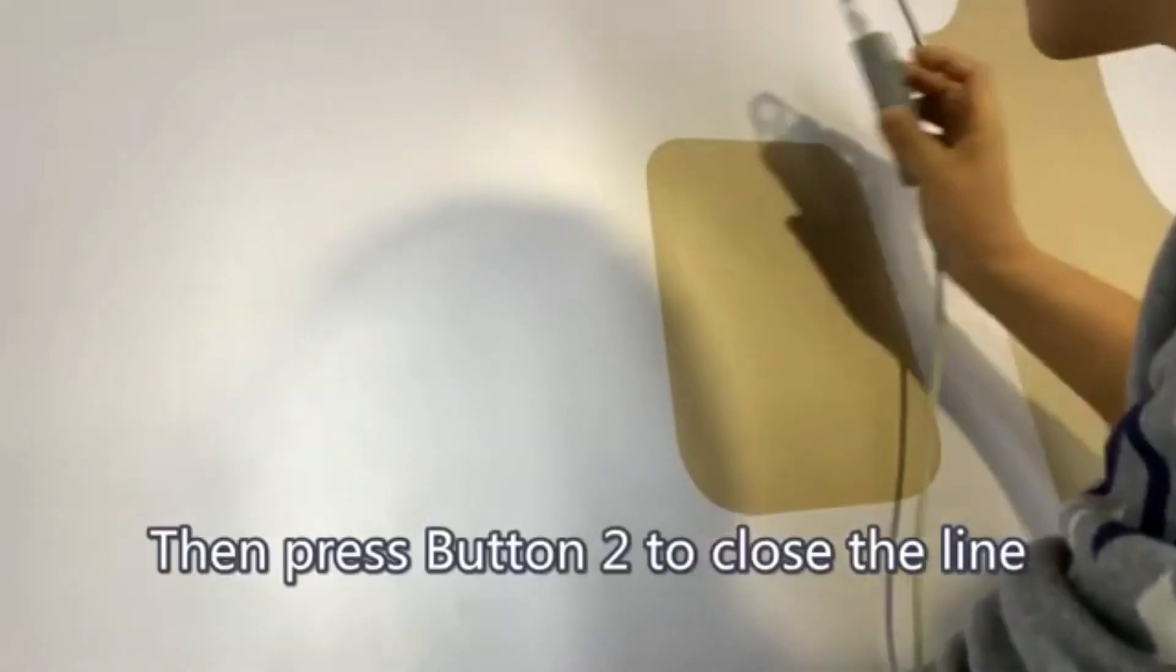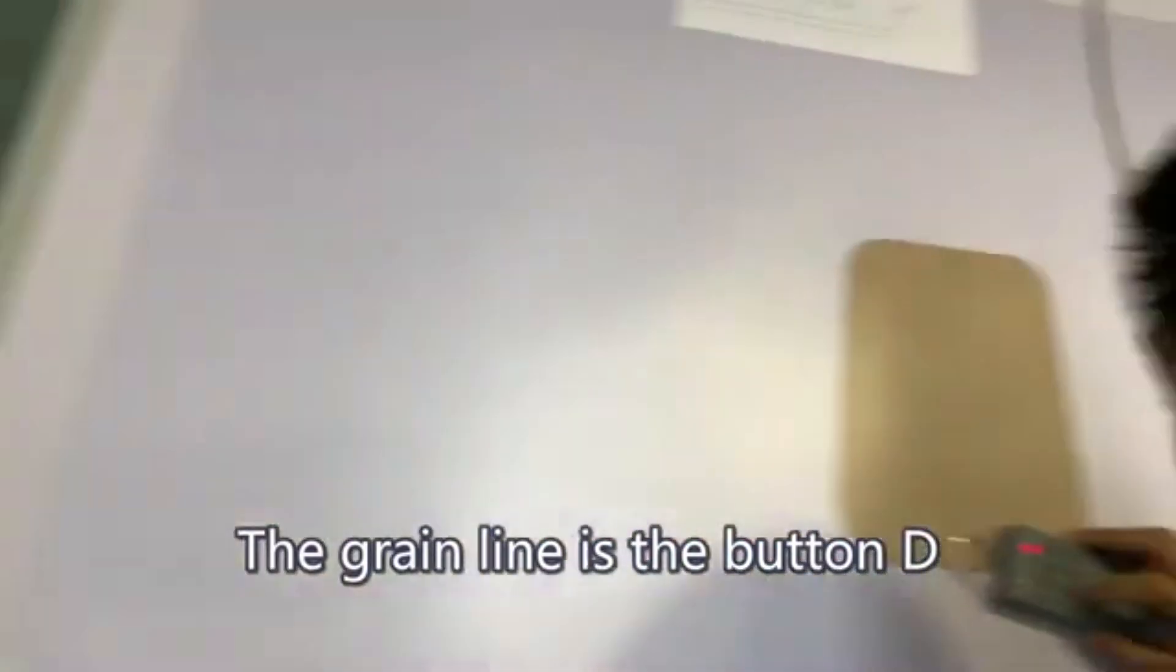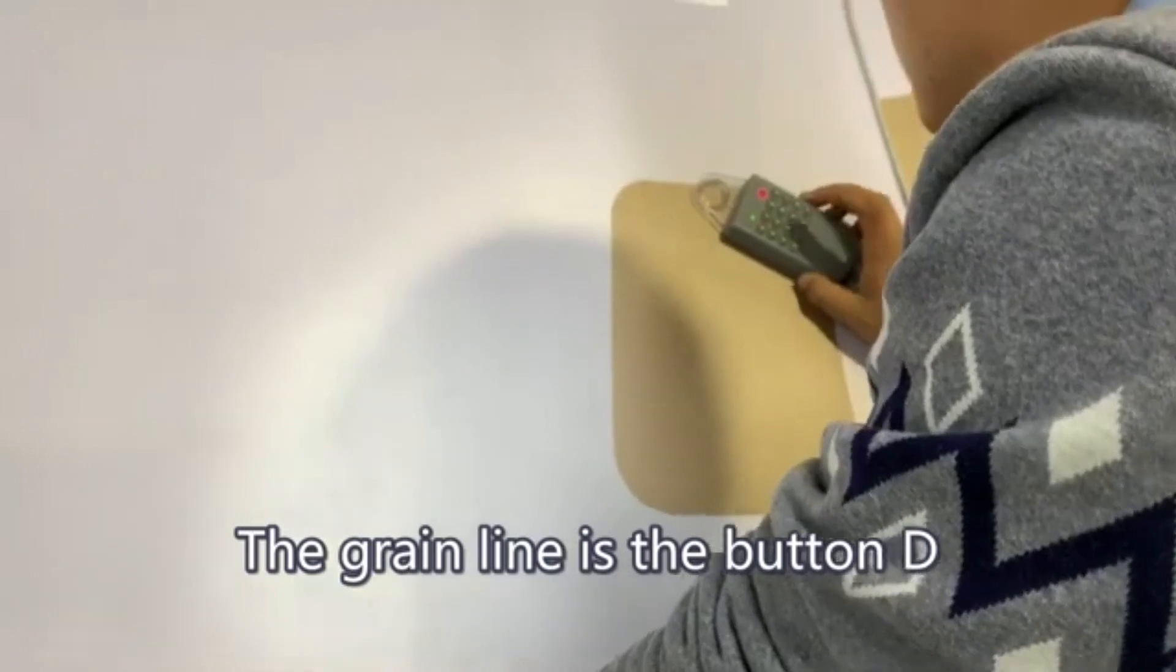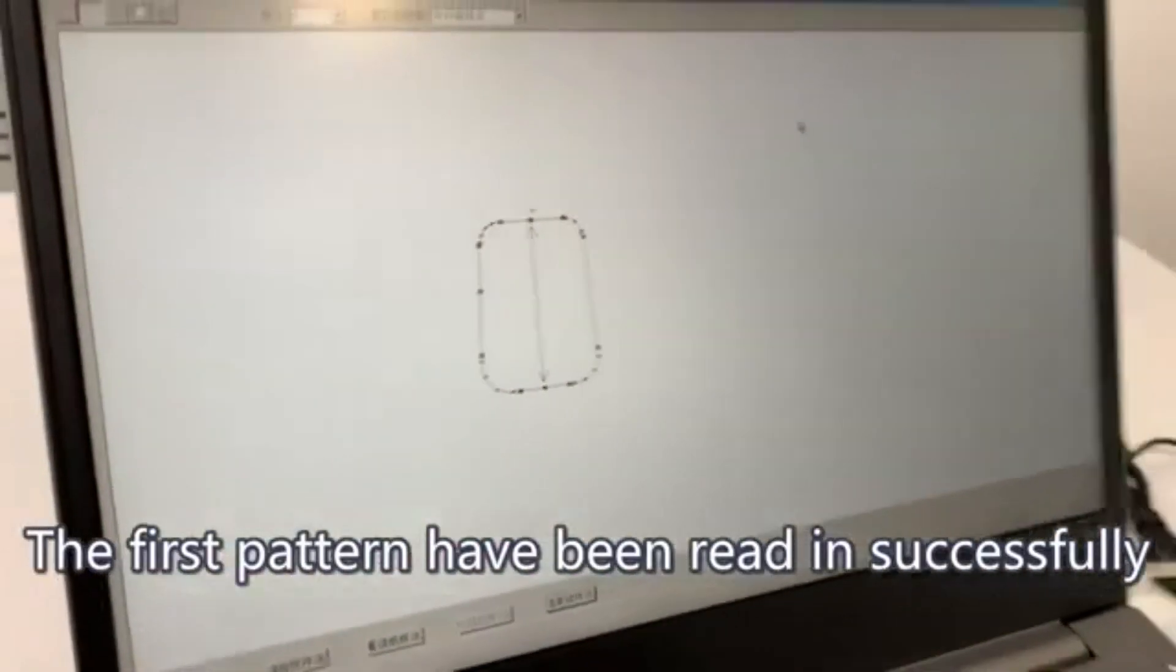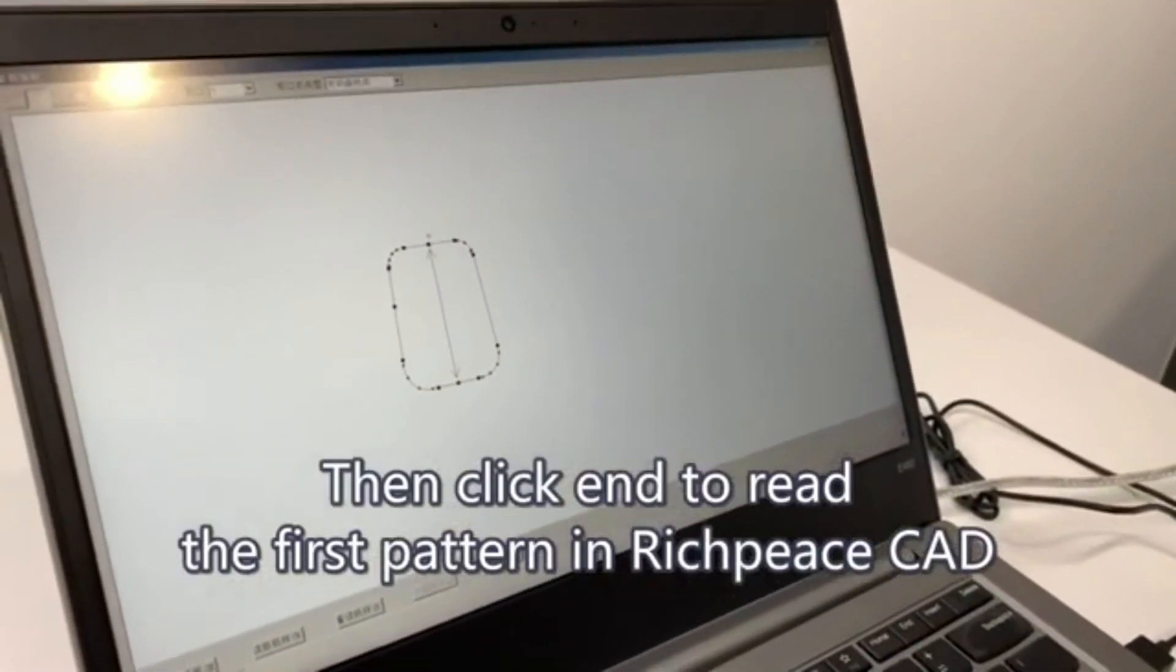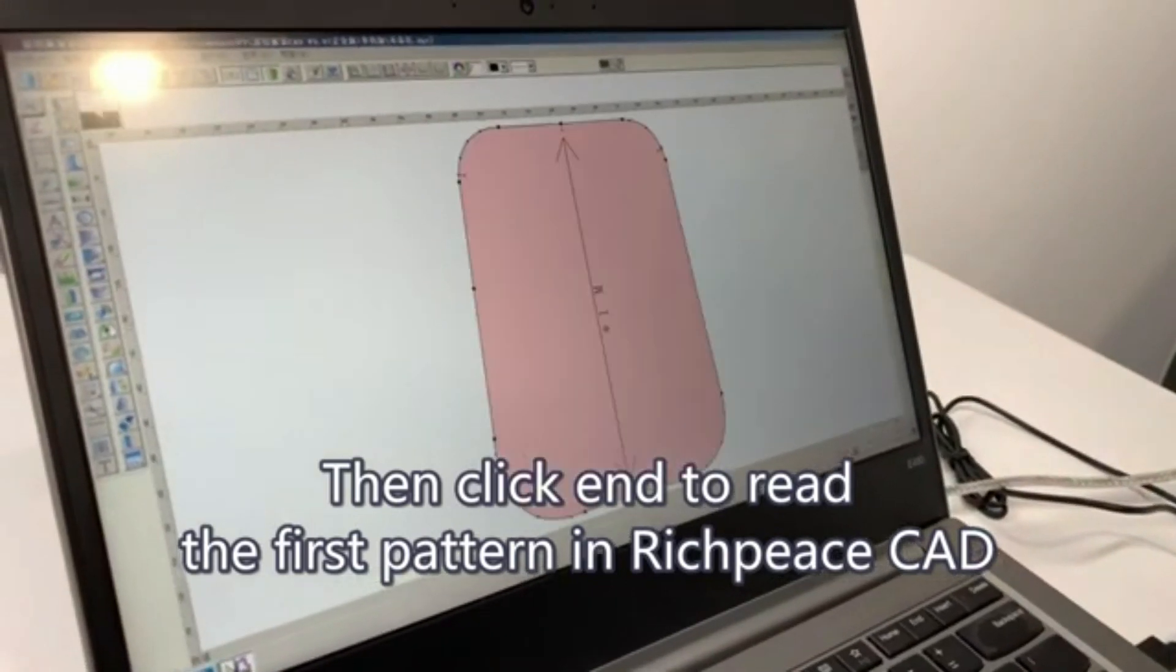Then press button 2 to close the line. The green line is the border. The first pattern has been read successfully. Then click N to read the next pattern.